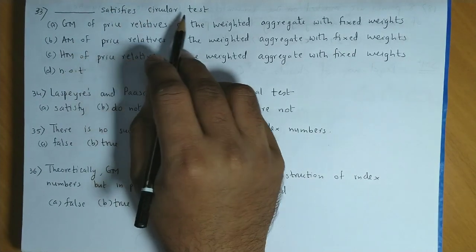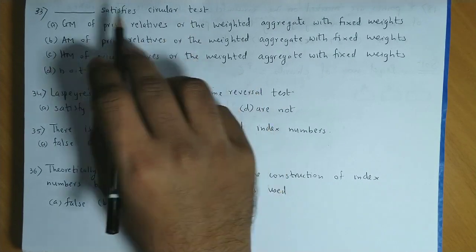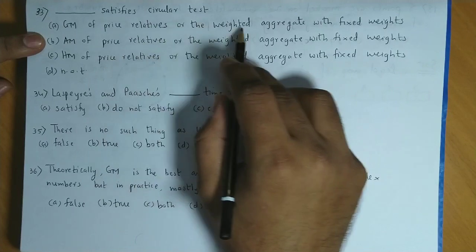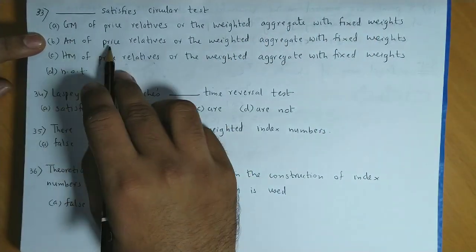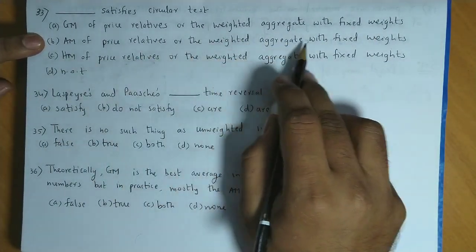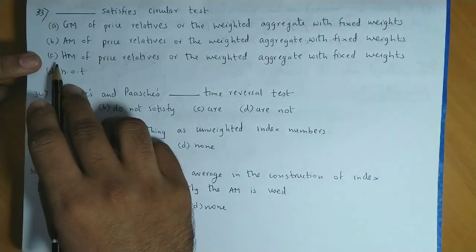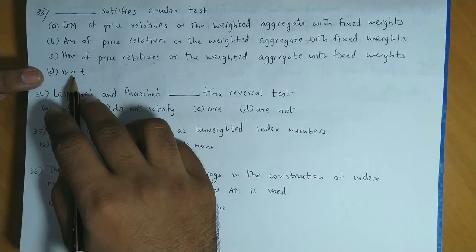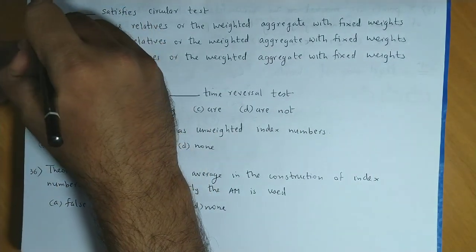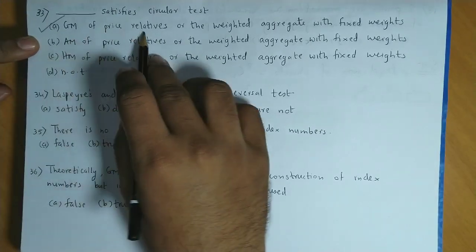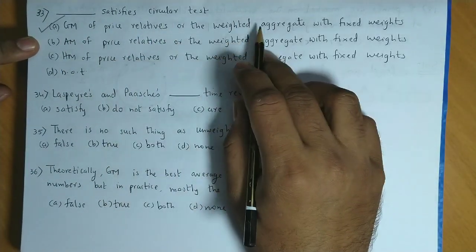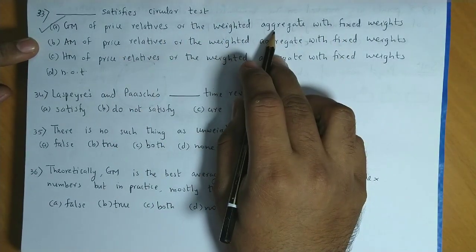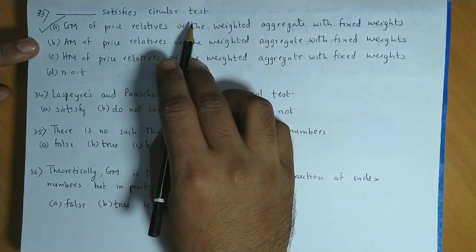Dash satisfies circular test. First option here: Geometric mean of price relatives or weighted aggregate with fixed weight. Arithmetic mean of price relatives or weighted aggregate with fixed weight. Next is Harmonic mean of price relatives or weighted aggregate with fixed weight. And the last is none of these. Now the correct answer is option A, Geometric mean of price relatives and the weighted aggregate with fixed weight. That is Kelly's index. So these are two index numbers which satisfy circular test.